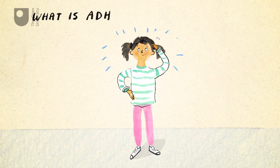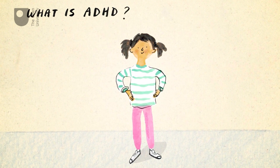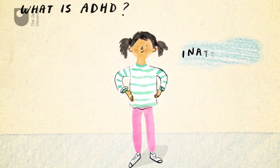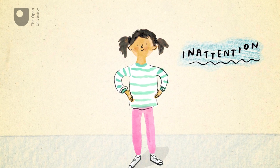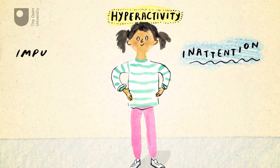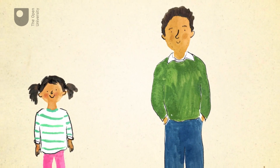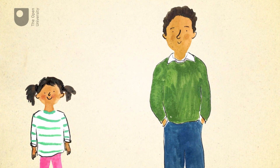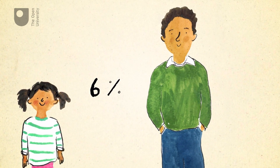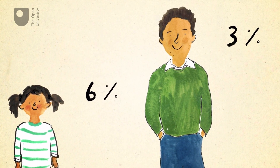What is ADHD? ADHD is a condition characterized by inattention, hyperactivity and impulsivity. It affects around 6% of children and around 3% of adults.